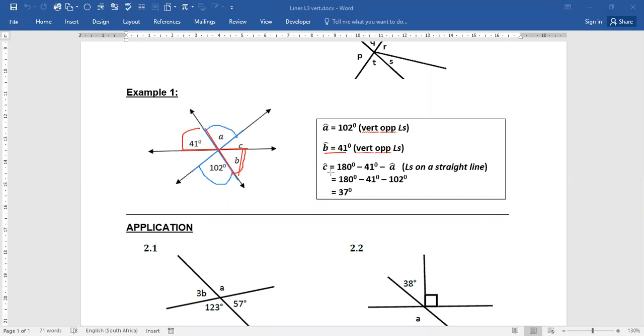Now we need to solve for C. Now vertically opposite to C is this angle here, but we do not have a value for this angle. So working with what we have, we have 41. We have a value for A. The value for A is 102 degrees. We have a value for B and B is 41.